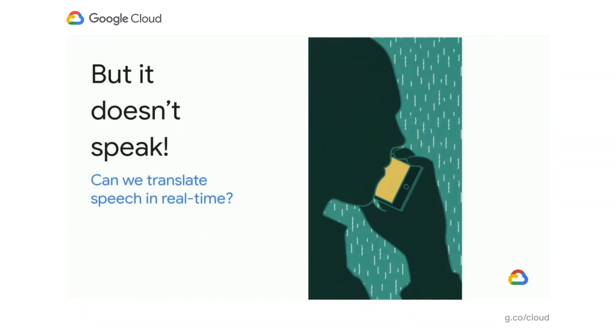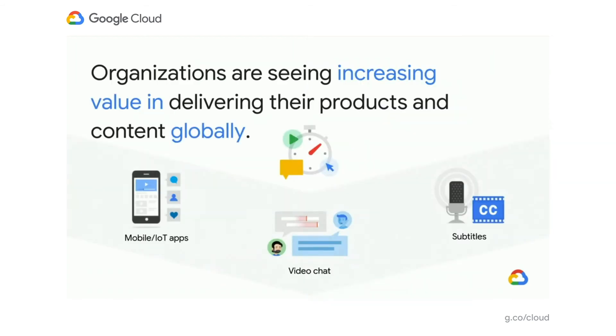Now let's go back to our chat scenario. Our chat app uses the right language, but it doesn't speak — it's actually just using text translation. Since users both write and talk, there are scenarios where we might want audio as well as text translation supported. Organizations are seeing value in delivering their products and content globally — not just in text, but in video, in audio, and in calls. In these scenarios, you want an easier way to implement translations, whether in media entertainment, technology, or for service providers supporting customer support cases.